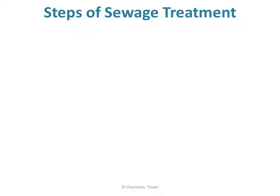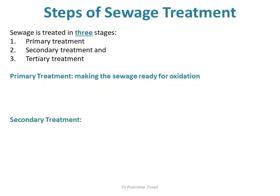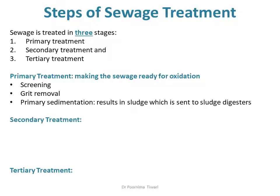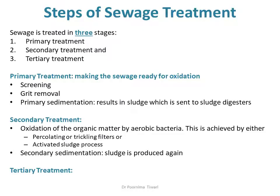The steps involved in the treatment of sewage: sewage is treated in three stages — primary treatment, secondary treatment, and tertiary treatment. Primary treatment makes sewage ready for oxidation. It consists of screening, grit removal, and primary sedimentation, which produces sludge sent to sludge digesters while the effluent goes to secondary treatment. Secondary treatment involves aerobic oxidation of sewage by aerobic bacteria, using either percolating filters or the activated sludge process, followed by secondary sedimentation. Tertiary treatment involves treatment of the sludge and disposal of effluent.